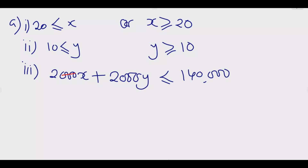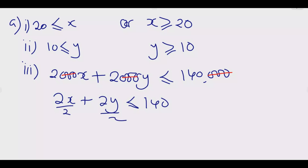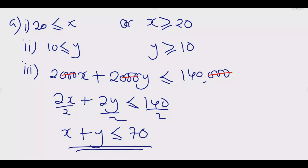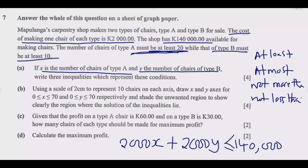Simplifying by dividing both sides by 1,000 gives 2X + 2Y ≤ 140. Dividing further by 2 gives X + Y ≤ 70. This is the third inequality. Once you have all three — X ≥ 20, Y ≥ 10, and X + Y ≤ 70 — you're good to go for part A.